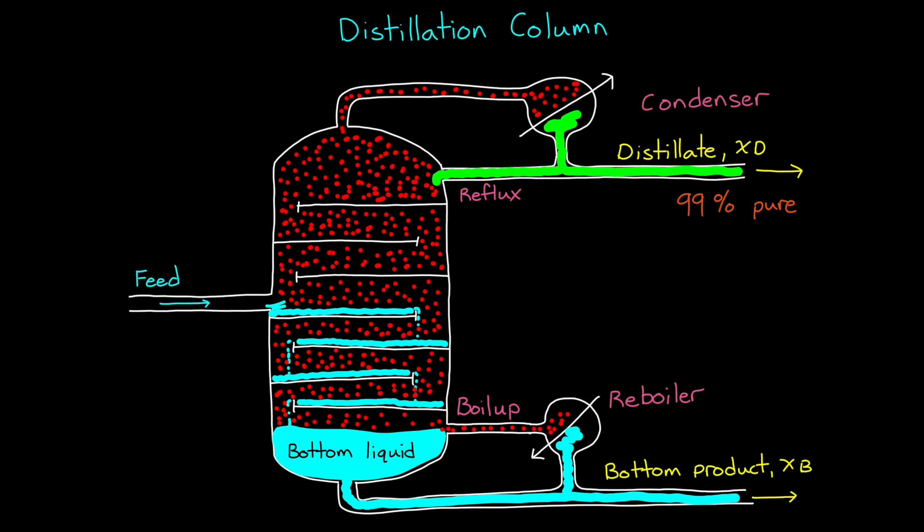But we also want to make sure that we're not leaving too much behind in the bottom product, because that would be wasteful. So we may require that there's no more than, say, 1% of the component left in the bottom product. And the way that we can control this system is by changing the reflux flow rate and the boil up flow rate. You know, how much of both of these are coming back into the system.